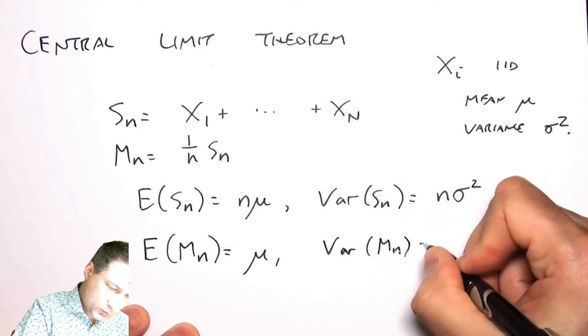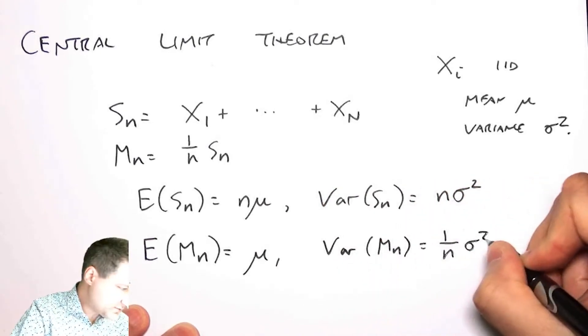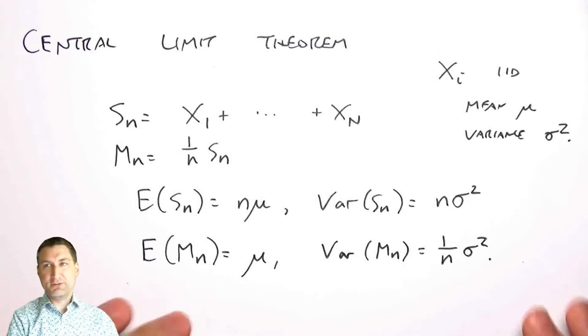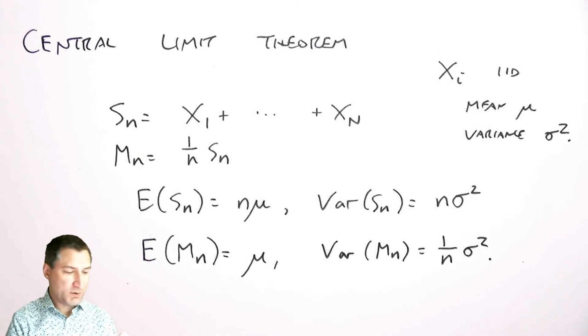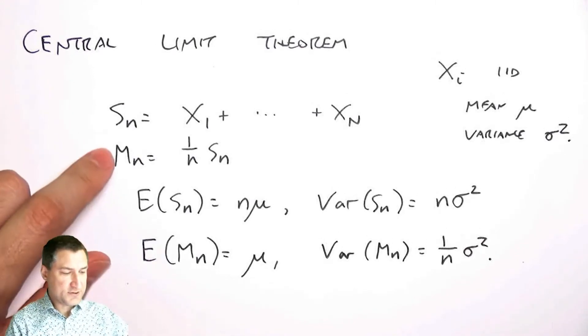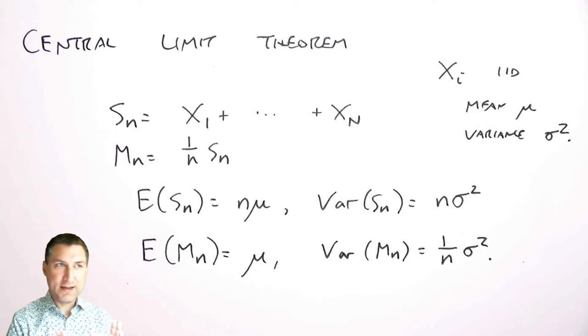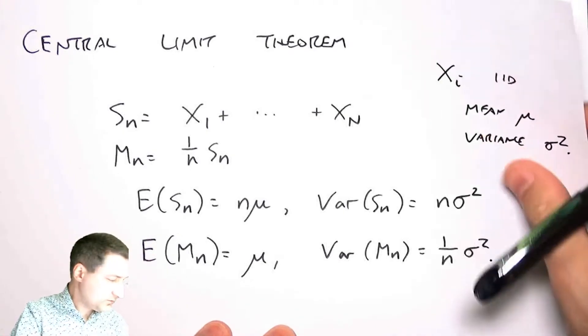All this is old news. What I want to talk about today is really focusing on not just the expected value and the variance, but what does the limit of the whole PDF, the whole distribution of this random variable look like. That's what the Central Limit Theorem is all about.